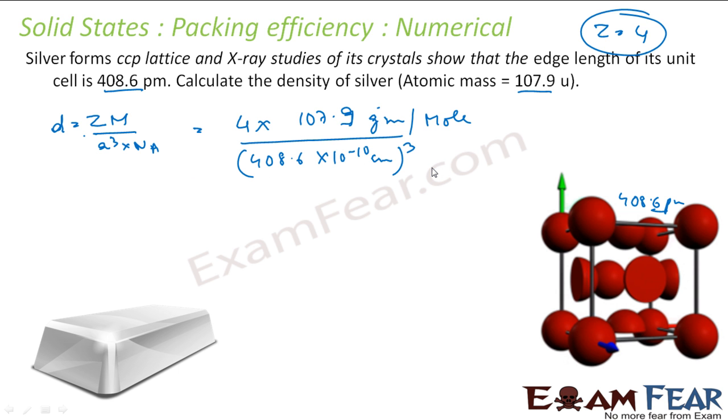Na - what is Na? Na is 6.022 × 10^23 atoms per mole. And this is 4 atoms actually. Cancel. Mole and mole also cancel.